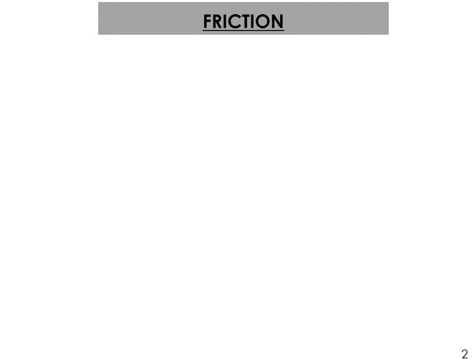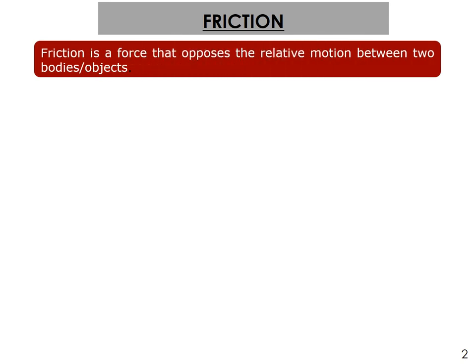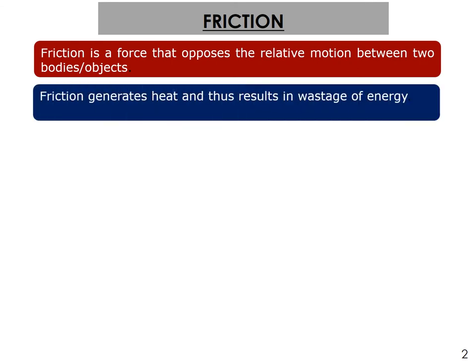Talking of friction, a very conventional definition which we all know well: it is a force that opposes the relative motion between two bodies or between two contact surfaces. That is the best way to express it, because when we talk about friction we should focus on the contact surface rather than the body. It generates heat and thus results in wastage of energy.